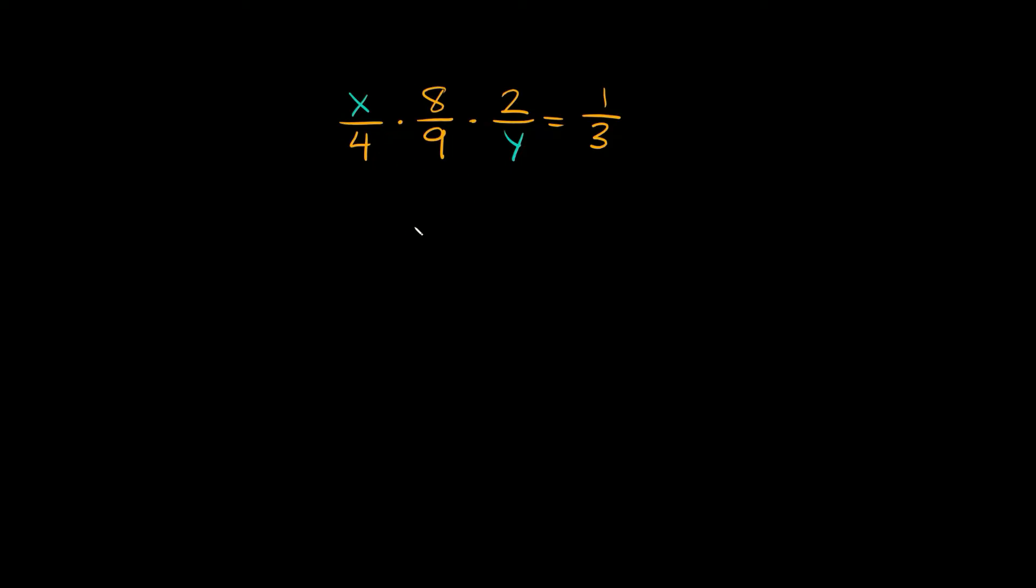Generally you need two equations when you have two variables that are unknown, but in this example I'm going to show you a little way to get around that.